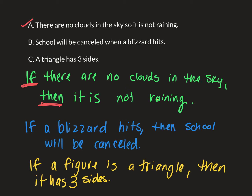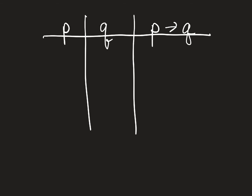Now let's look at the truth table for conditional statements. If p is true and q is true, that means the entire conditional statement is true. If p is true and q is false, then our statement is false. And if p is false and q is true, then our entire conditional statement is considered to be true.